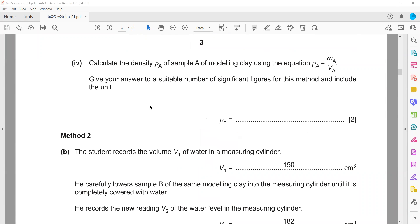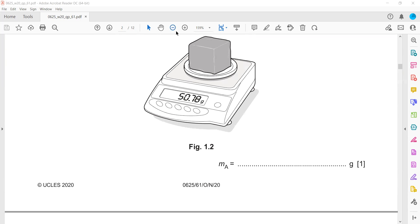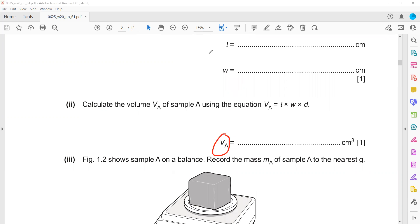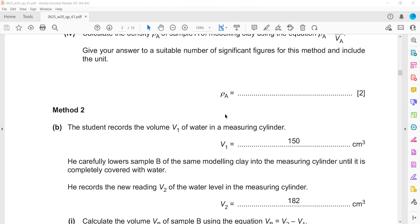Calculate the density of sample A. How to calculate density: mass divided by volume, m_A divided by V_A. The mass m_A is 51 g and V_A is the volume we calculated. Divide the mass by the volume to get the density, which is about 1.89.